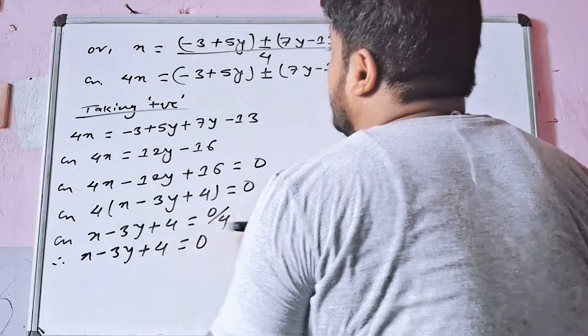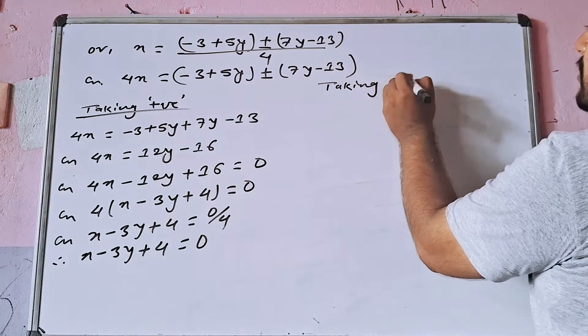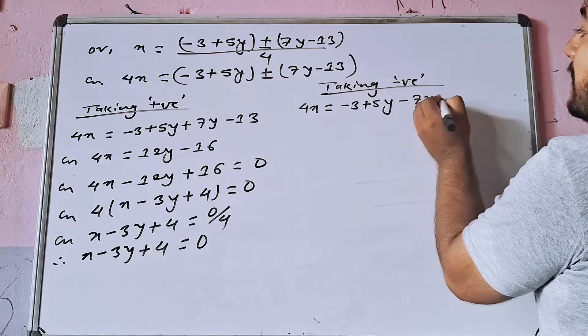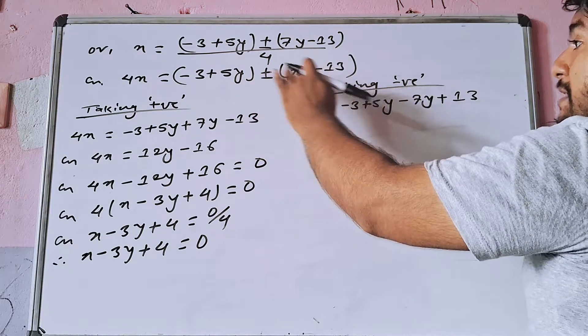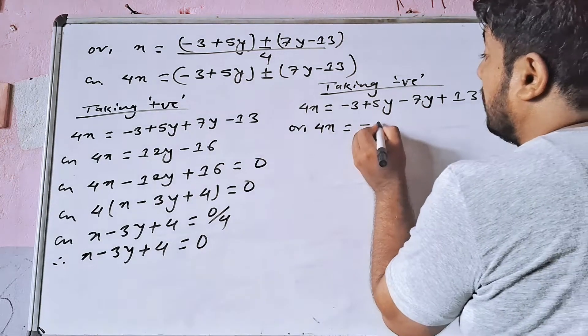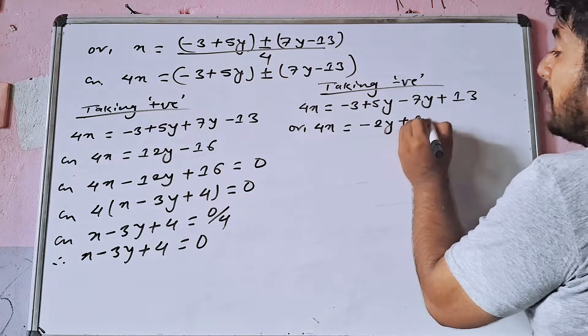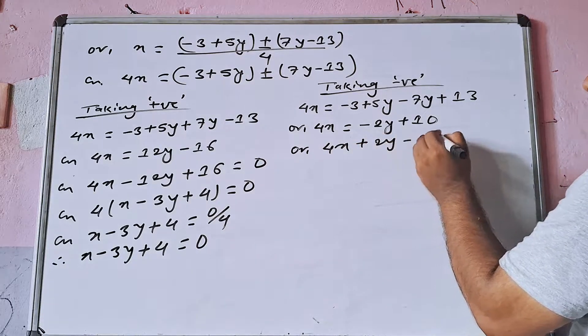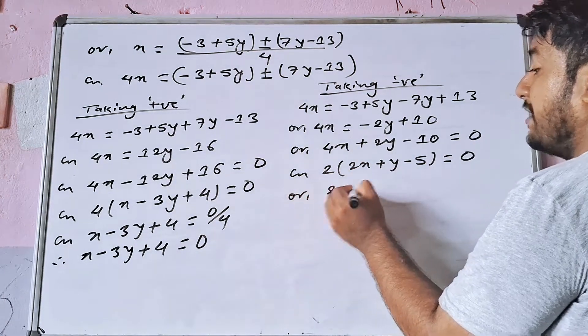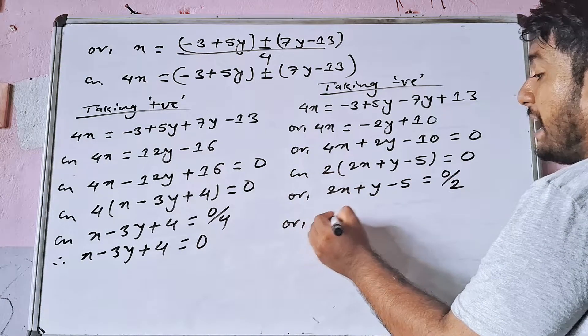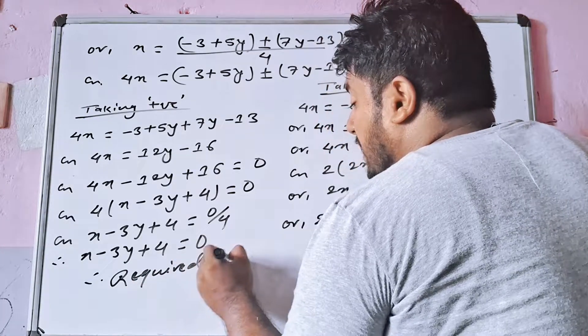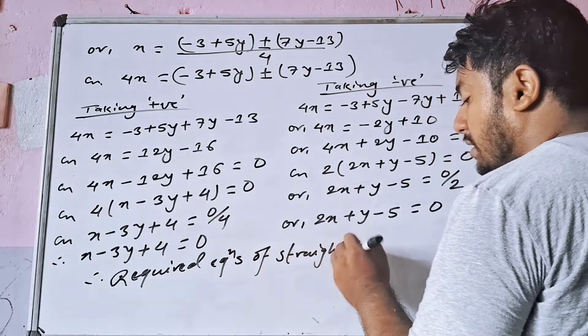Taking negative: 4x is equal to minus 3 plus 5y minus 7y minus 13, which gives 4x minus 2y minus 10. So 2x plus y minus 5 equal to 0.